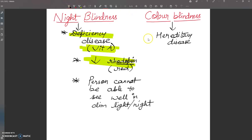Next we'll discuss color blindness. I have told you that it is a hereditary disease, and here there is the absence of a particular kind of cone or cones in the retina.